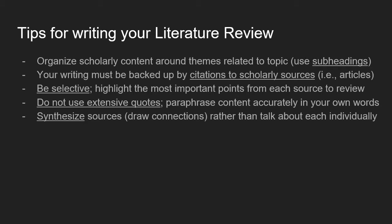You want to be selective — highlight the most important points from each source. Being selective applies to both what you include from a particular article and which articles you include. You may come across hundreds or thousands of potential academic journal articles, but be intentional about which you choose. When you include a description of research, go to the results section of those empirical research papers and find out exactly what the main findings were, so you can describe them in your own words.